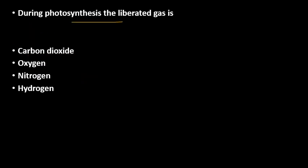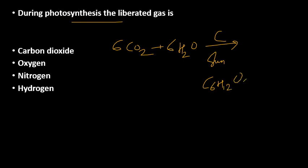During photosynthesis the liberated gas is oxygen. Plants take CO2 and water, then in the presence of chlorophyll and sunlight the reaction becomes C6H12O6 which is the formula of glucose, and 6 O2 is liberated in this reaction.